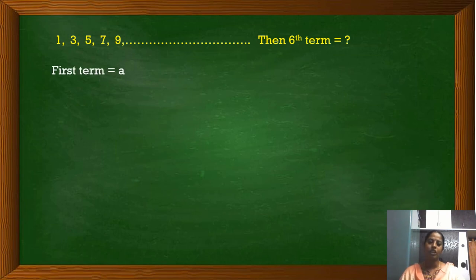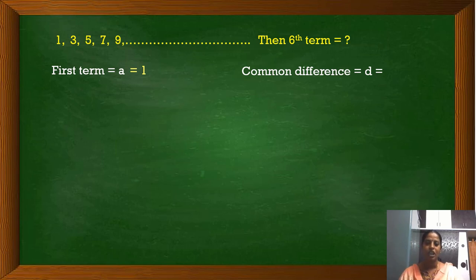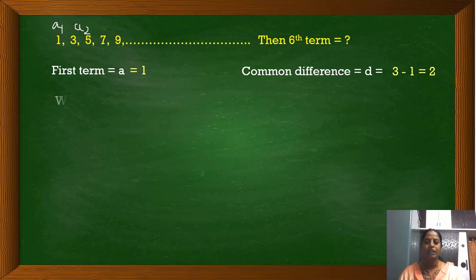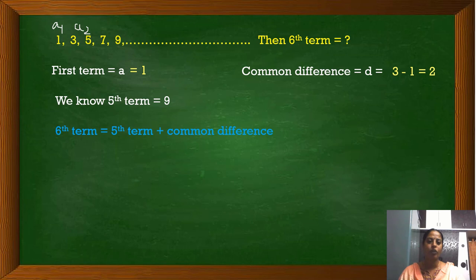In this arithmetic progression, the first number is 1 and it is called the first term. The common difference is the definite number added to get the next number. A2 is 3 and A1 is 1. If we subtract 1 from 3, we get the common difference 2. We have 5 terms in this sequence. We need the 6th term. If we add the common difference to the 5th term, we get the 6th term. The 5th term is 9 and the common difference is 2, giving 11 as the 6th term.